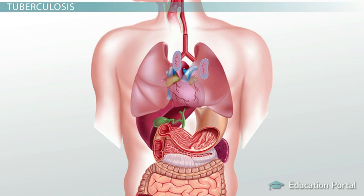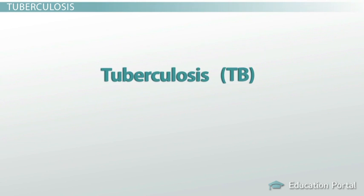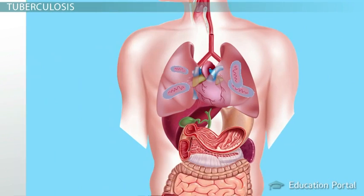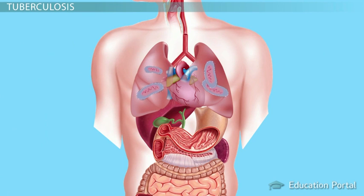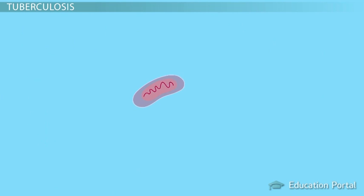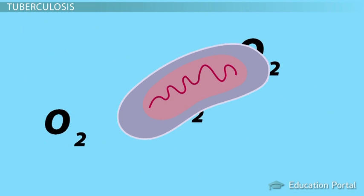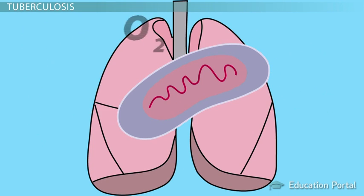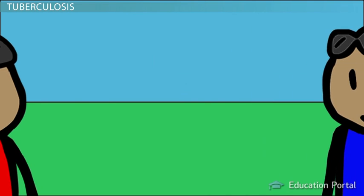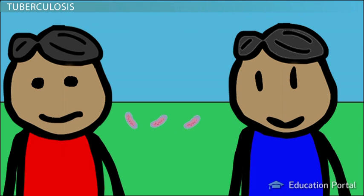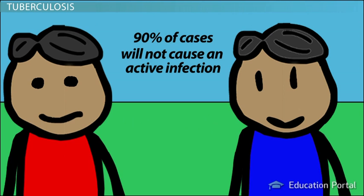This bacterium causes a condition known as tuberculosis, or TB for short. This is a respiratory disease that may cause everything from a bloody cough to death. The fact that this is a respiratory disease associated with air makes perfect sense, since Mycobacterium tuberculosis is an aerobic bacterium meaning it needs air to survive. Therefore, as a general rule, this bacterium will probably be associated with something like the lungs. If a person has tuberculosis and they cough, sneeze, or even talk around you, they may spread this bacterium. Once you inhale it, it will enter your lungs, and in 90% of cases, thankfully not cause an active infection.